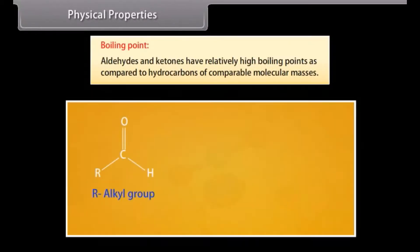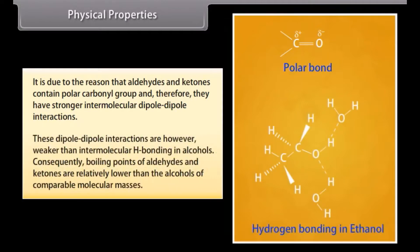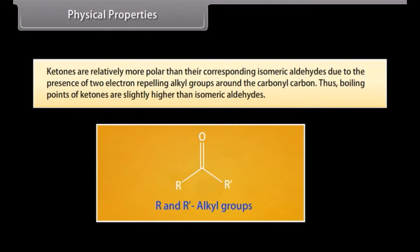Boiling point. Aldehydes and ketones have relatively high boiling points compared to hydrocarbons of comparable molecular masses. This is because aldehydes and ketones contain a polar carbonyl group, giving them stronger intermolecular dipole-dipole interactions. These interactions are, however, weaker than the intermolecular hydrogen bonding in alcohols, so boiling points of aldehydes and ketones are lower than those of alcohols of comparable molecular masses. Ketones are relatively more polar than their isomeric aldehydes due to two electron-repelling alkyl groups around the carbonyl carbon, so ketones have slightly higher boiling points than isomeric aldehydes.